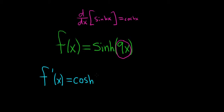We leave the inside untouched, and then multiply by the derivative of the inside. The inside function is 9x, and its derivative is 9. The last thing to do is put the 9 in front, so this is 9 cosh(9x).